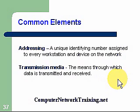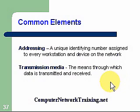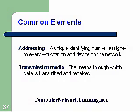Some more common elements — addressing. A unique identifying number is assigned to every workstation and device on our network. Everything on our network is a node, and each of these devices needs both what we call a MAC address, which is a physical address, and an IP address, which is a logical address because we can change it with software. So we have two addresses for every device in order to find those devices and be able to communicate with them.